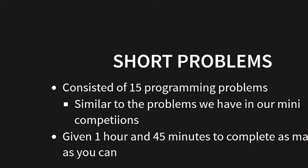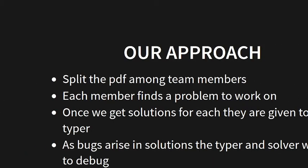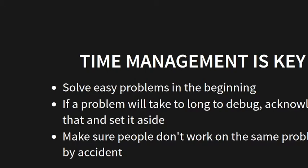You get an hour and 45 minutes to have as many solutions typed as you can. The way we did this: we'd split up the PDF as paper to everybody, then everybody would read through them, pick a problem they thought they could solve, and solve it. We would write pseudocode on notebook paper. Once you get your solution done, we gave it to our team's designated typer, and he'd type it up. If there was a bug that arose after he typed it, we would solve it together.